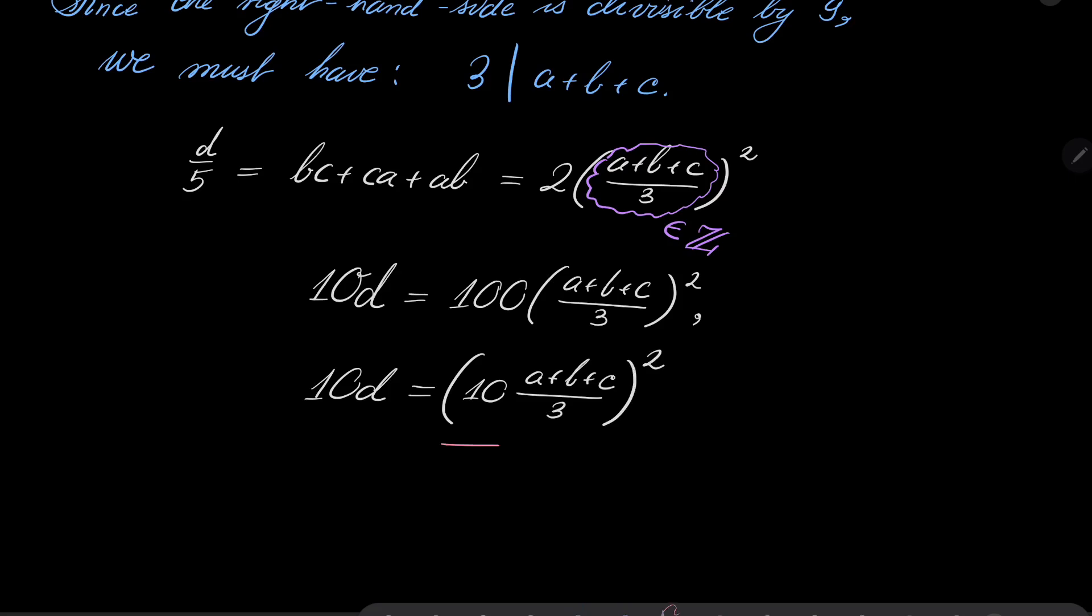And of course, this is a perfect square. This closes our proof, because it is exactly what we wanted to demonstrate: 10d is a perfect square.